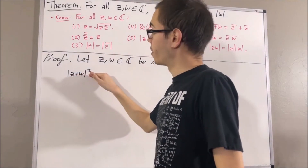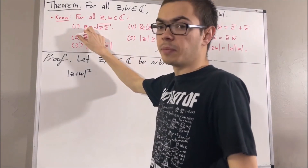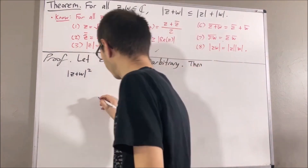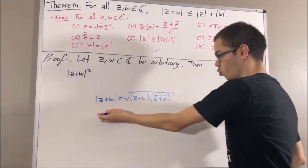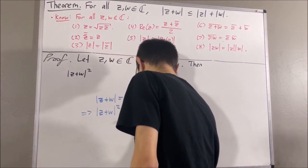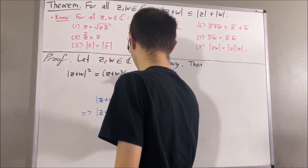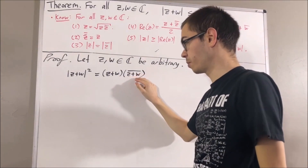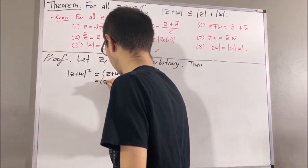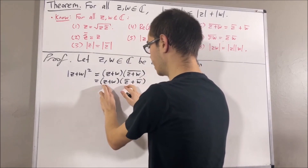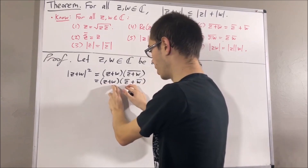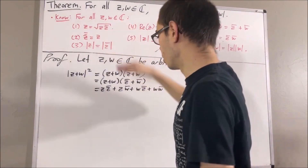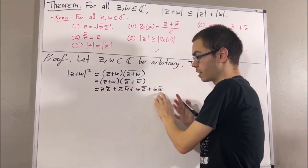By result 1, taking z to be the complex number z + w, we have |z + w| = √((z + w)(conjugate of z + w)), and squaring both sides gives |z + w|² = (z + w)(conjugate of z + w). By result 6, the conjugate of z + w equals z̄ + w̄. Expanding, we get z·z̄ + z·w̄ + w·z̄ + w·w̄. Applying result 1 again, z·z̄ = |z|² and w·w̄ = |w|².